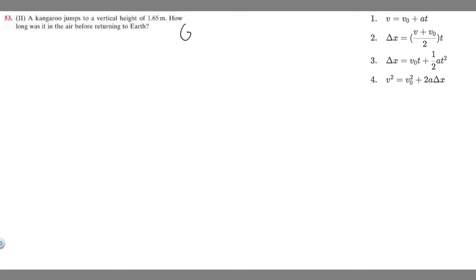So let's write down what we're given first. We're told it jumps to a vertical height of 1.65 meters, so it's going to change like this 1.65 meters and we're going to set that to be delta y, so its change in position is 1.65 meters.